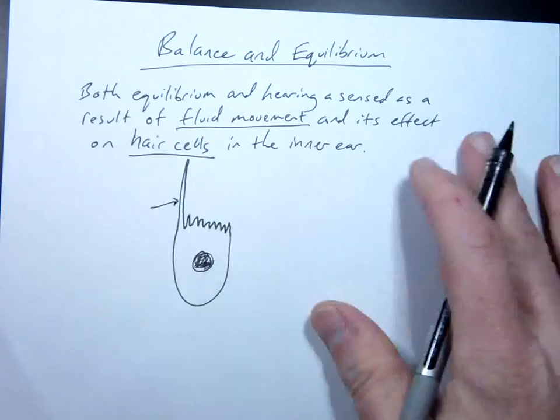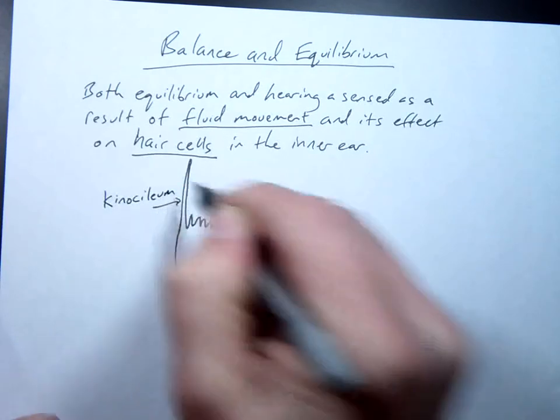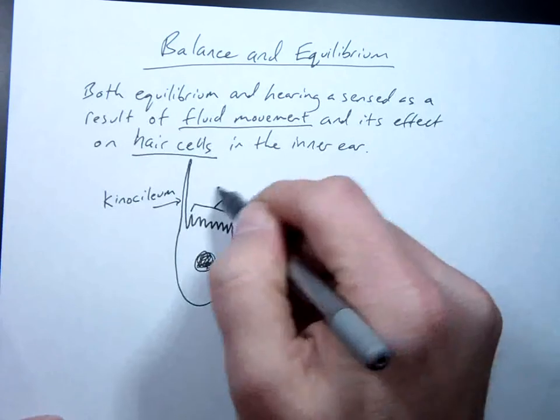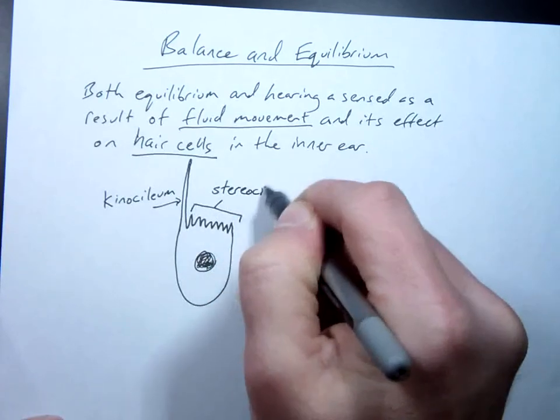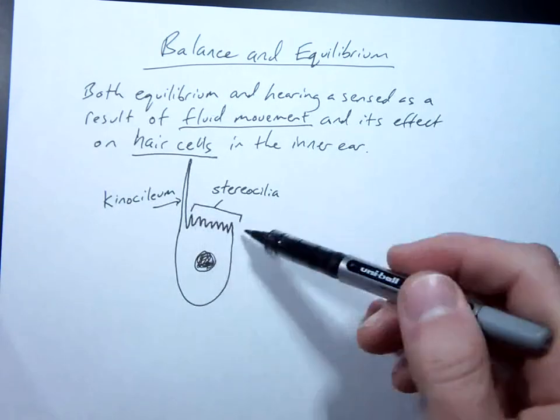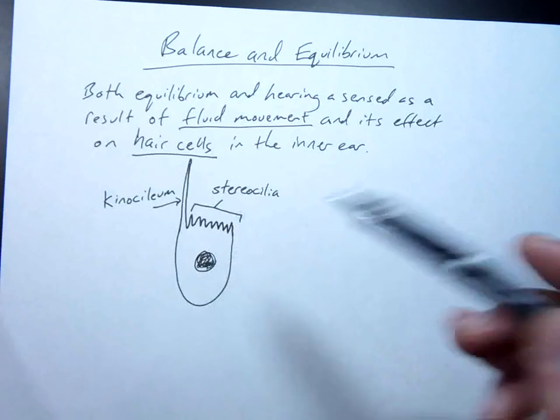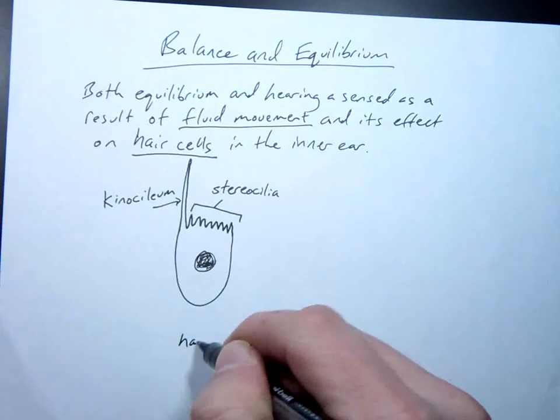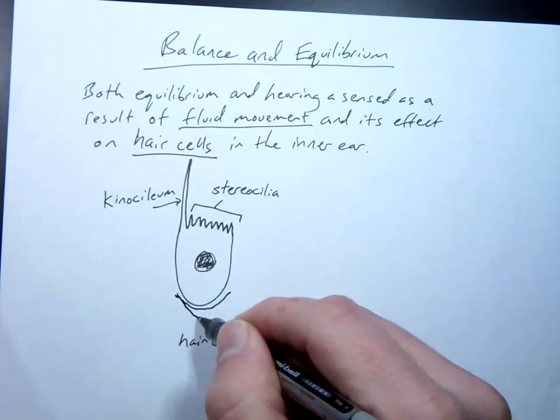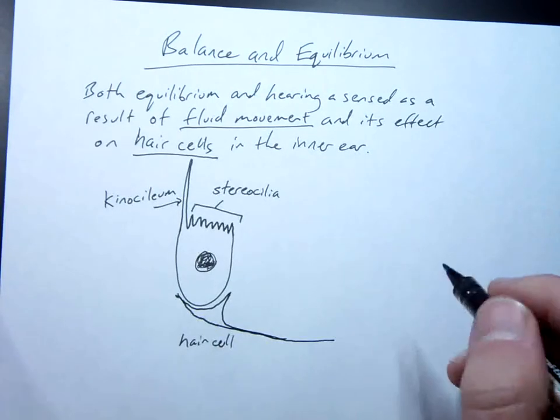Now, this gigantic one right here is called the kinocilium. All these little ones right here are called stereocilia. And there is a variation between how much taller this one is than these. Sometimes it's just a little bit taller. Sometimes it's way taller. This is a hair cell, which is a specialized nerve cell, and it is attached to other neurons that are sending that information then to the brain for processing.